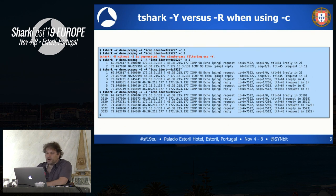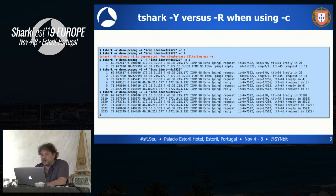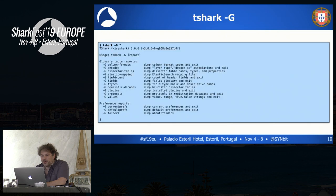If you look at the last example, those were the frame numbers for the ICMP identity packets. With the read filter, you see they're all matched — one, two, three, four, five, six — all the packets on display match that read filter. So that's also something to take into account in your troubleshooting.